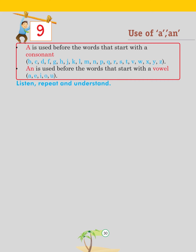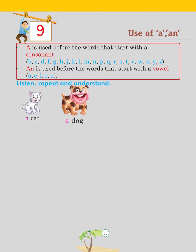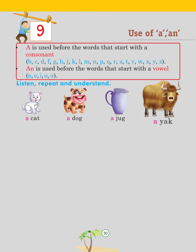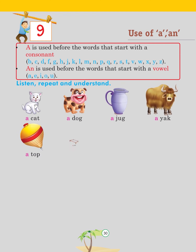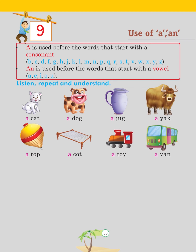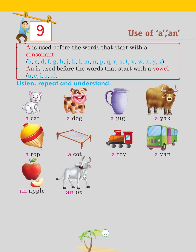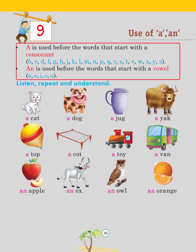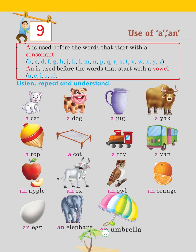Listen, repeat and understand: a cat, a dog, a jug, a yak, a top, a cot, a toy, a van; an apple, an ox, an owl, an orange, an egg, an elephant, an umbrella, an igloo.